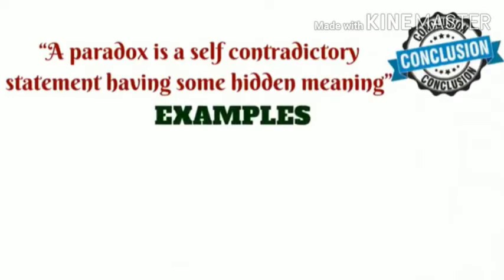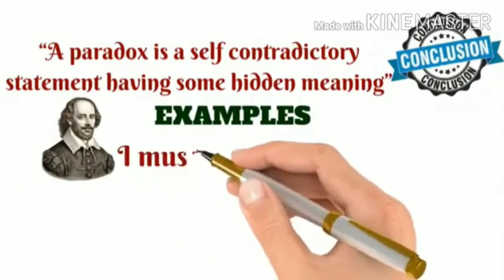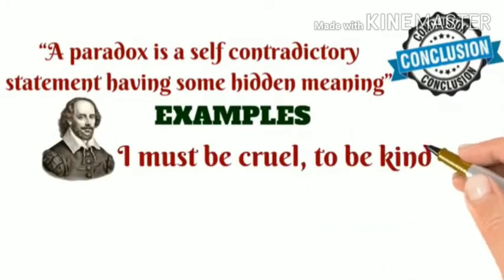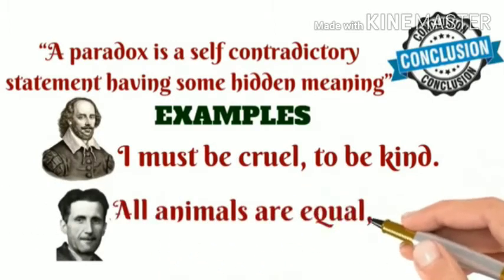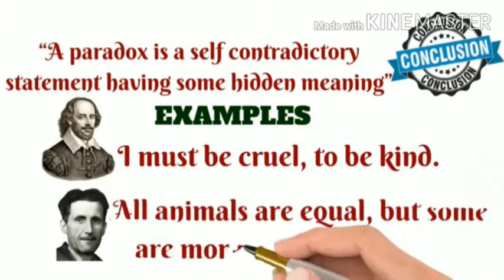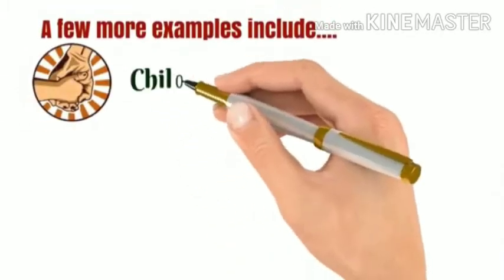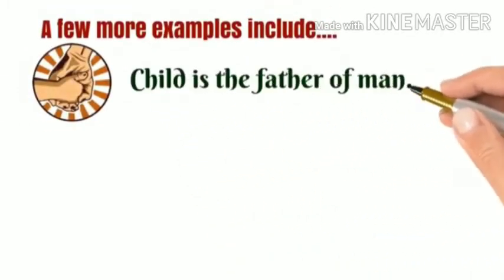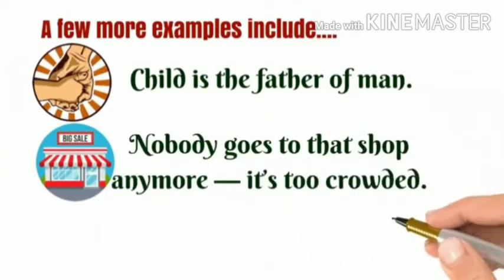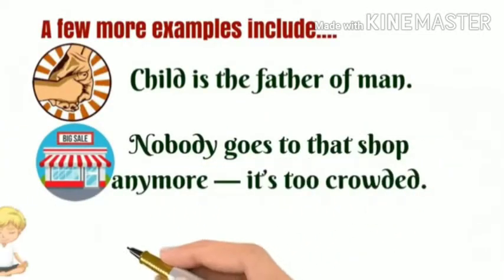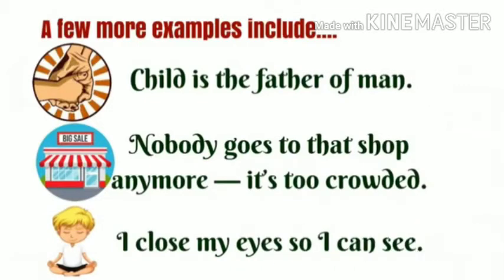Examples: William Shakespeare says, 'I must be cruel to be kind' — it's a paradox. George Orwell says, 'All animals are equal, but some are more equal than others.' A few more examples: 'Child is the father of man.' 'Nobody goes to that shop anymore — it's too crowded.' 'I closed my eyes so that I can see.'